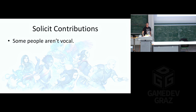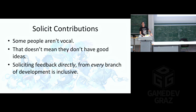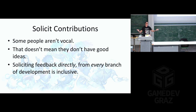Soliciting contributions is extremely important. Some people are not vocal, but a person not being vocal doesn't mean they don't have good ideas — it just means they're shy, not confident, or had a bad experience where a previous director shot down their ideas. If you solicit feedback directly from people on the team, it really makes the process very inclusive. This means going to someone and saying: "hey, I have this idea about this thing — what do you think?" or "I'm looking for ideas about what we could put in the final area of the game — what do you think?" You'd be surprised how many interesting insights people on your team might have.